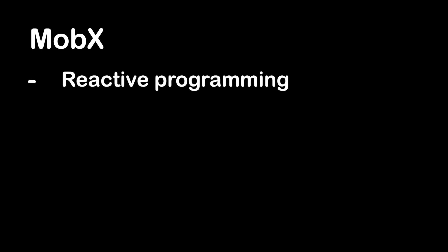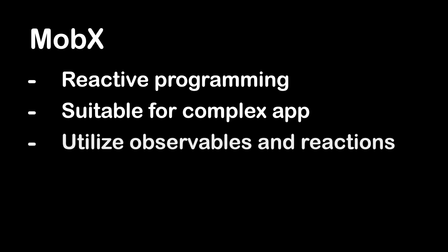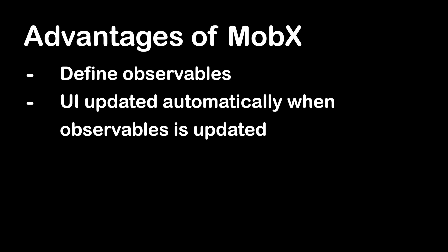Lastly, MobX. MobX is a state management library that uses reactive programming to manage state in Flutter apps. It's well suited for complex apps with large amounts of state and provides a simple, easy-to-use API. It utilizes observables and reactions to automatically update the user interface in response to changes in the application state. With MobX, you can define observables, which are variables that can be observed for changes. When an observable is updated, any reactions that depend on it are automatically triggered, such as updating the UI to reflect the new state.